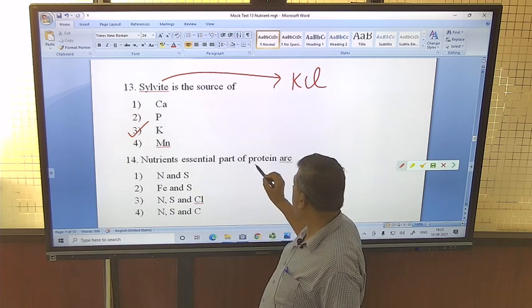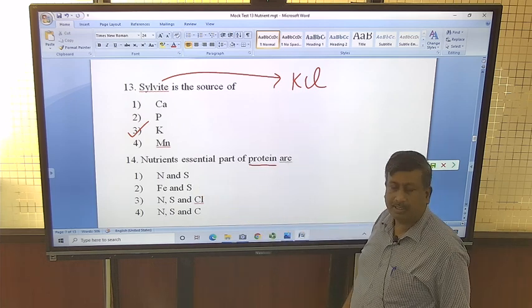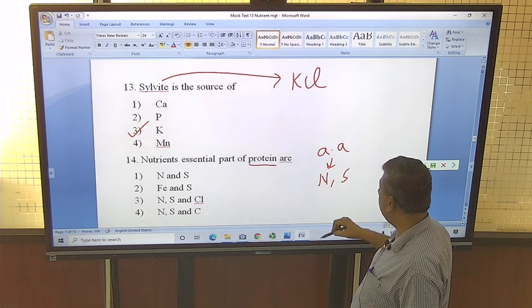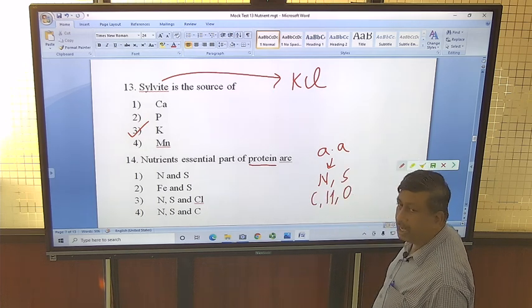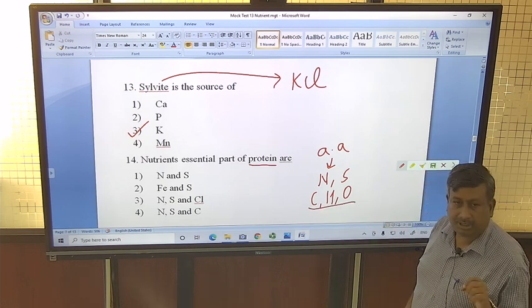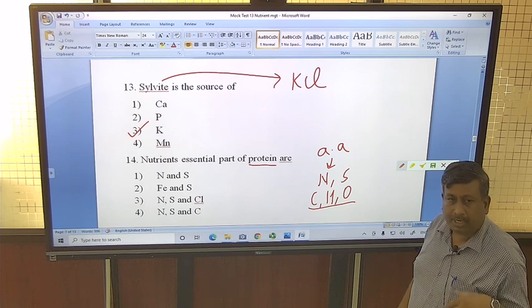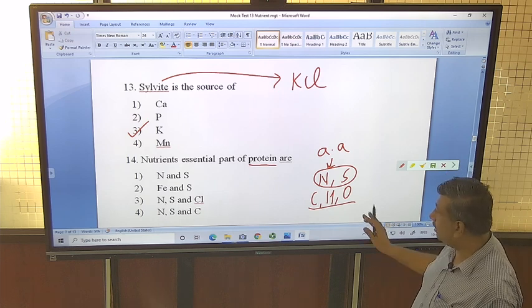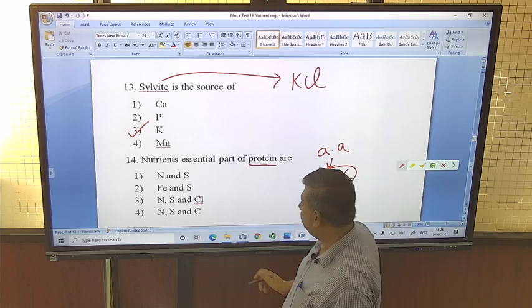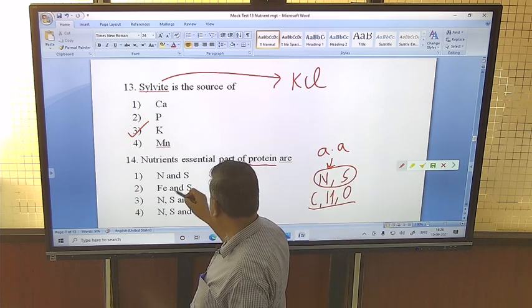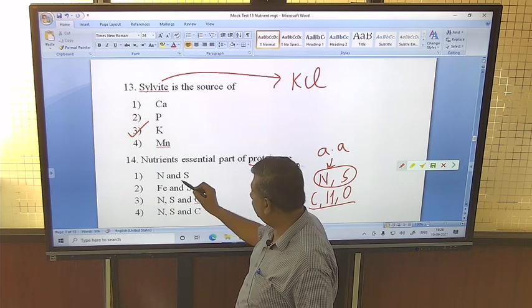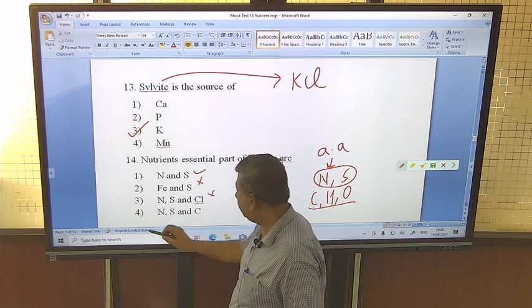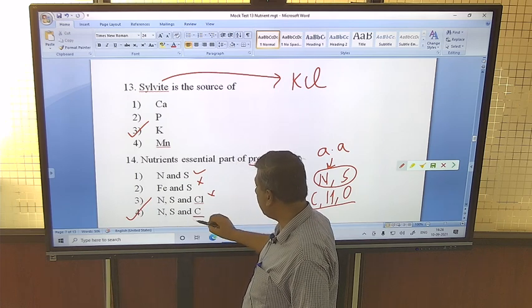The nutrient essential part of protein - actually proteins are made up of amino acids and amino acids are composed of nitrogen and sulfur beside carbon, hydrogen and oxygen. Carbon, hydrogen and oxygen are the essential constituents of all biological molecules - carbohydrate, fat, protein. And nitrogen and sulfur are components of amino acids, that's why protein contains nitrogen and sulfur. If we look at the options, N and S is correct, P and K is incorrect, nitrogen and sulfur and chloride is incorrect. Here the correct option is nitrogen and sulfur and carbon because it contains carbon.